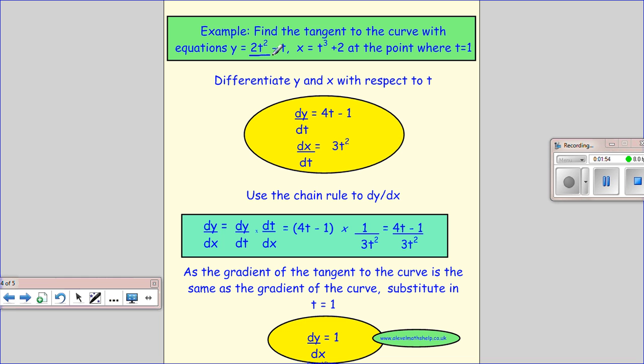So looking at this one, remember how we differentiate? We multiply by the power and take 1 from the power. So that gives me 4t and then minus t just becomes 1. And this is going to give me, when we differentiate x with respect to t, it's going to give me 3t squared. And the constant gives me nothing. You should all be comfortable with that.